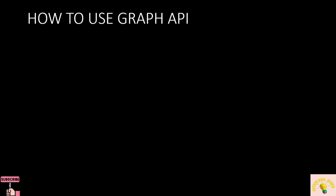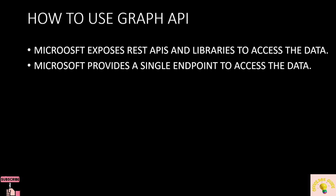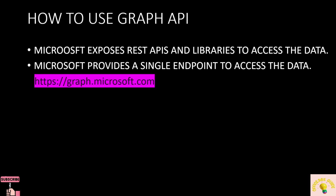Let's talk about how to use Microsoft Graph API. Microsoft Graph exposes some REST APIs and libraries to access data, and it uses one endpoint — graph.microsoft.com — to access all the data. With this one endpoint, I can call multiple cloud services like Teams, Exchange, and Azure AD to get the data that I want.